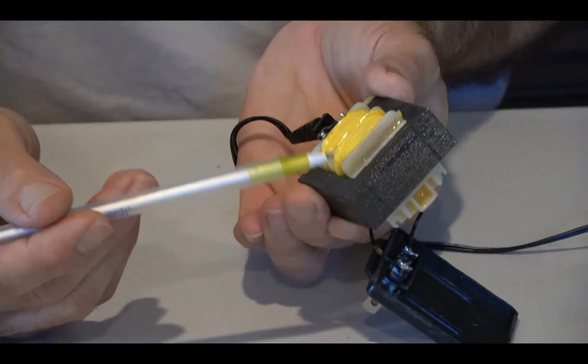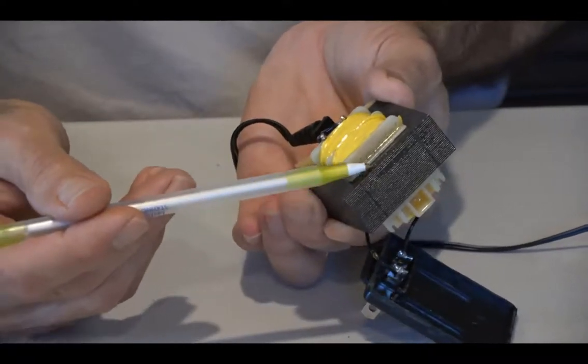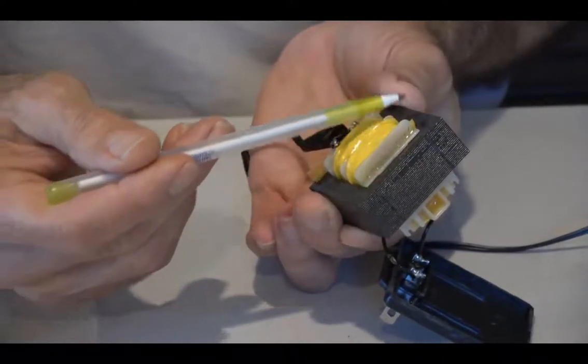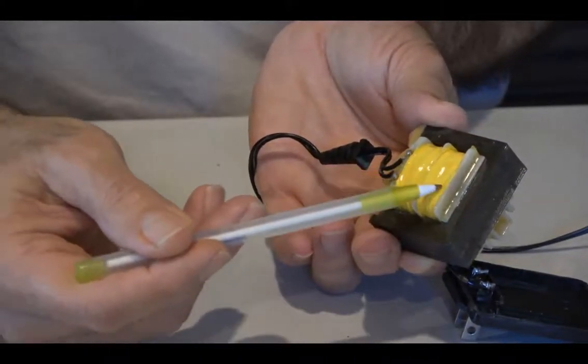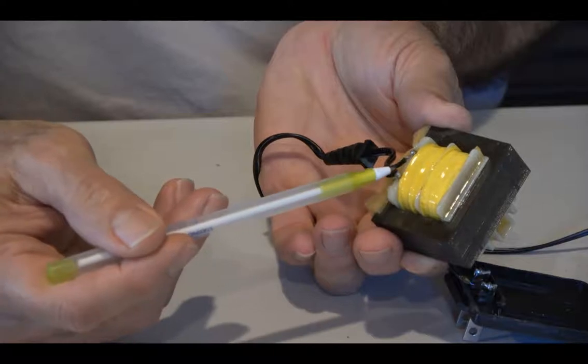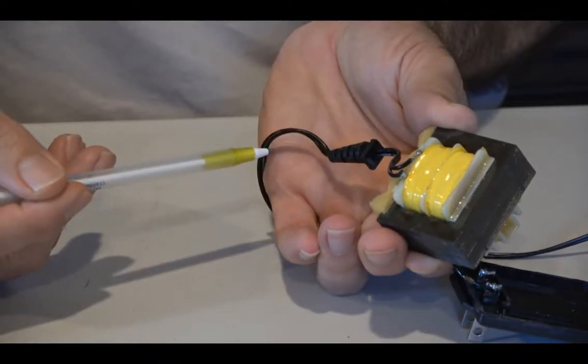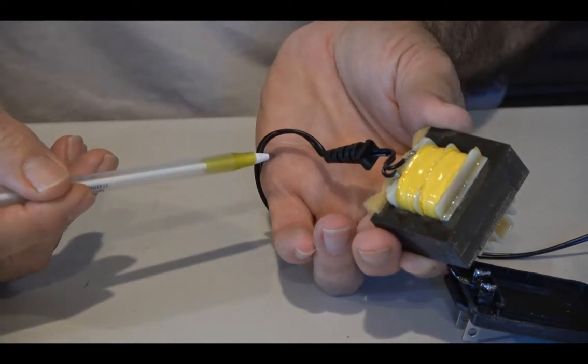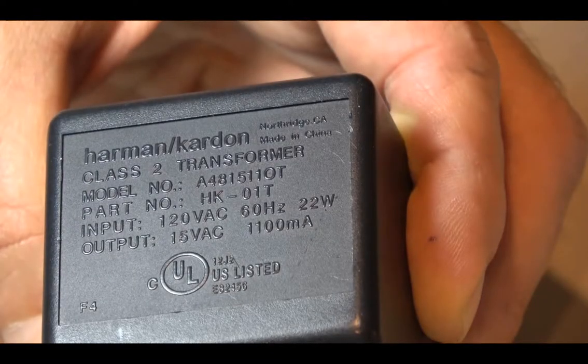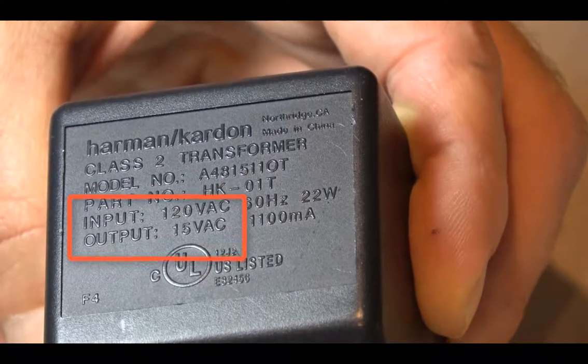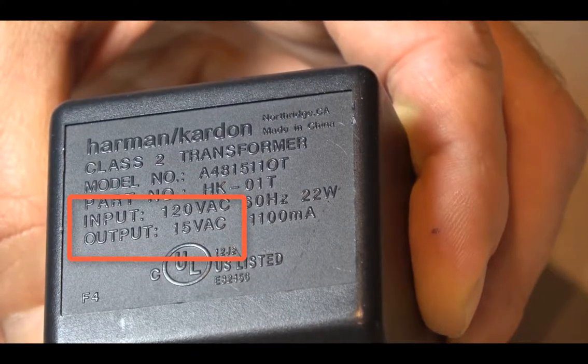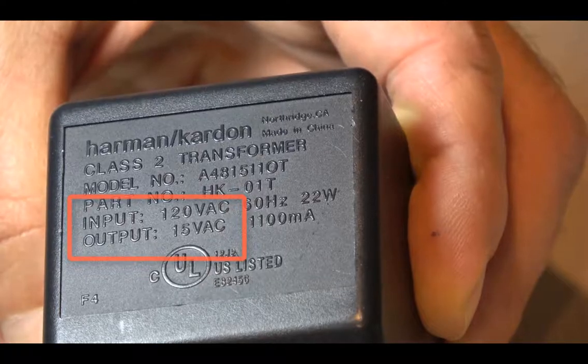But something is missing from our little black box. Can you think of what it is? Stop the video and see if you can tell what's missing. Did you spot what's missing? If this little black box is powering a battery operated device, it has to convert the signal to DC, direct current, because that's what batteries supply. But there's nothing here to do that. This is just a transformer. It takes in AC power at one voltage and puts it out at another voltage. Let's take a closer look at this black box and see what it's supposed to do. It takes in 120 volts AC and puts out 15 volts AC.